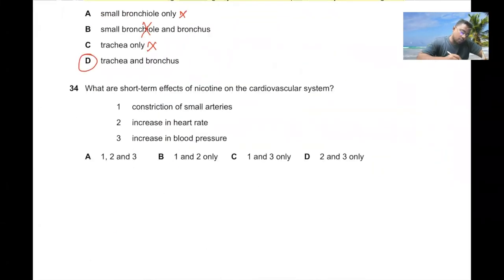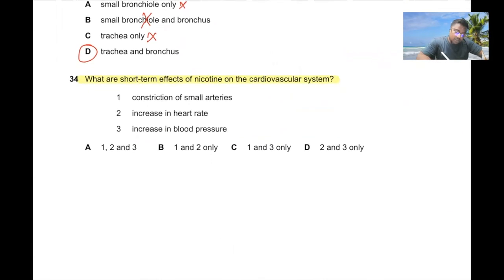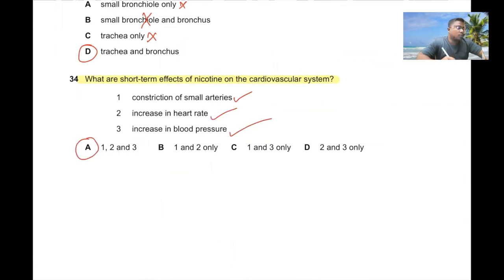Question number thirty-four. What are the short-term effects of nicotine on the cardiovascular system? Nicotine causes constriction of small arteries, increased heart rate, and increased blood pressure — all of these are correct. The answer is 34A.